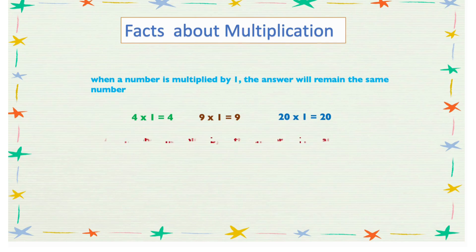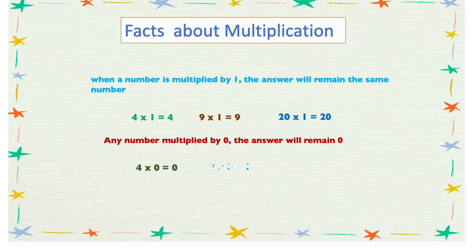Another fact is that any number multiplied by 0, the answer will be 0. For example: 4 times 0 is 0, 7 times 0 is 0, 12 times 0 is 0, and so on with any number.